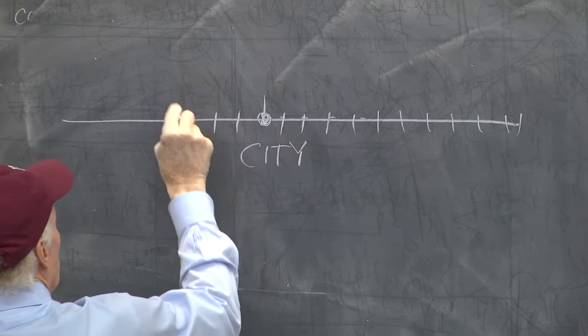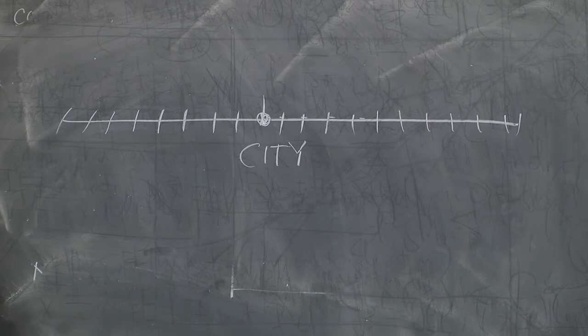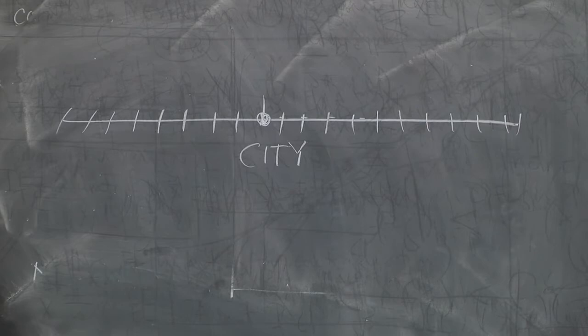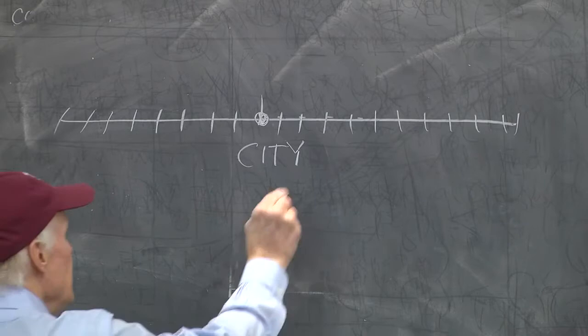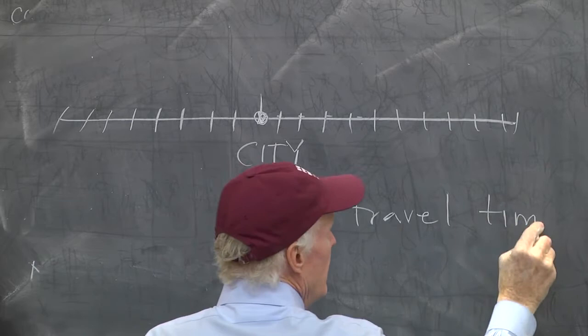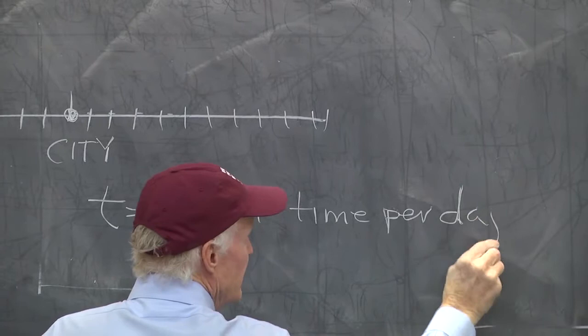There's just a road that runs through this city. I want to make it just a linear road to make my life easy. You have to decide how far from the city you're going to live. I'm going to let T equals the travel time per day of a location. So that's your daily travel time.